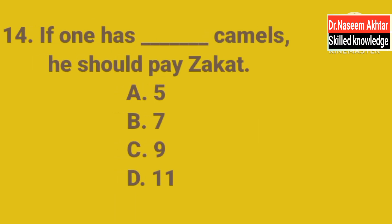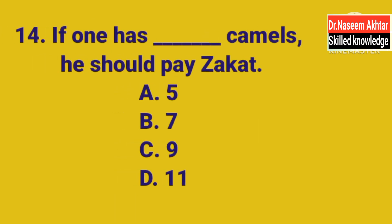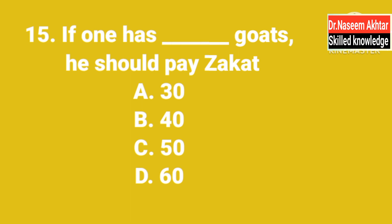MCQ 14: If one has dash camels, he should pay Zakat. اونٹ کتنے ہونے چاہیے جس پر Zakat فرض ہے؟ A. 5, B. 7, C. 9, D. 11. The correct answer is A — 5. 5 camels پر Zakat فرض ہے۔